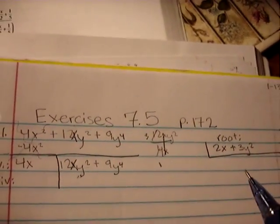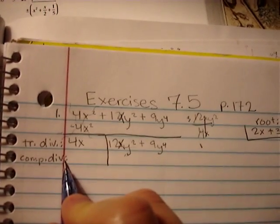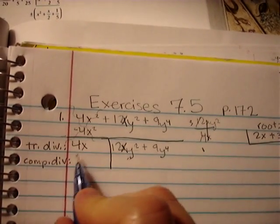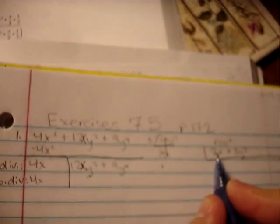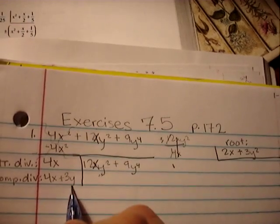Okay, so I found my next term. Now, my complete divisor, let's fill that in. It is found by taking that double term and adding it to the latest term that I found. Plus 3y squared.